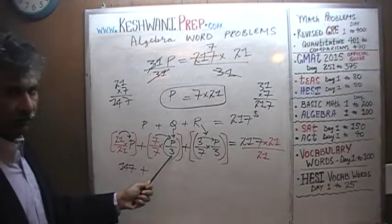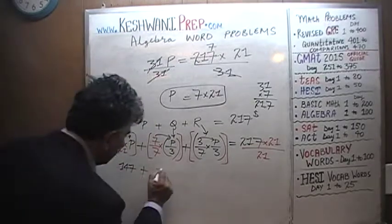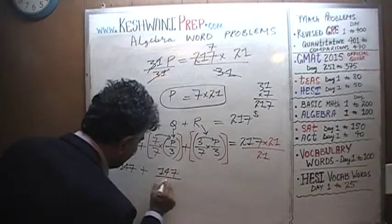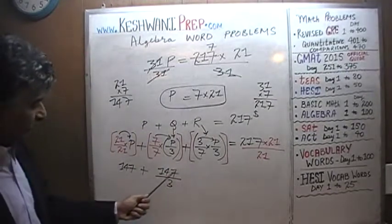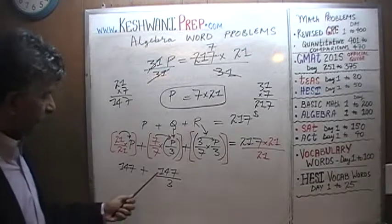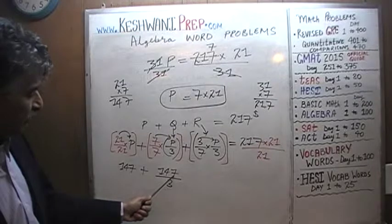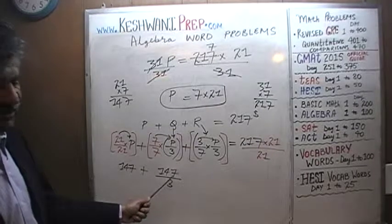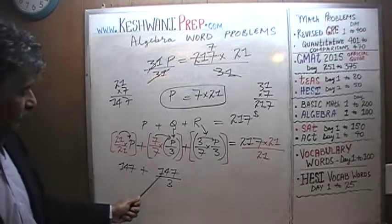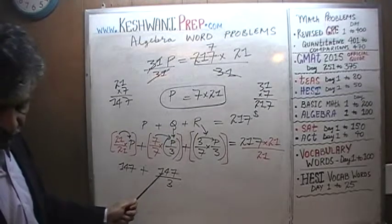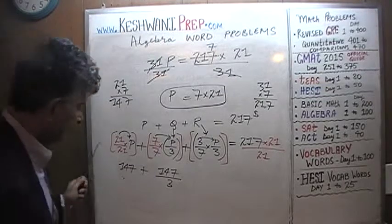Q is a third of P. What's a third of 147? 147 over 3. Is that number even divisible by 3? We'll find out. 1 plus 4 is 5, 5 plus 7 is 12. Since the sum of the digits is divisible by 3, the number itself must be divisible by 3.